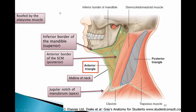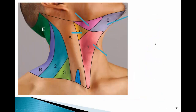Now let's look at the anterior cervical region — the anterior triangle of the neck. The anterior boundary is the midline of the neck. The posterior boundary is formed by the anterior border of the sternocleidomastoid. The superior boundary is the inferior border of the mandible. The apex is located at the jugular notch of the manubrium. Its roof is formed by subcutaneous tissue containing the platysma, and the floor is formed by the pharynx, larynx, and thyroid gland.